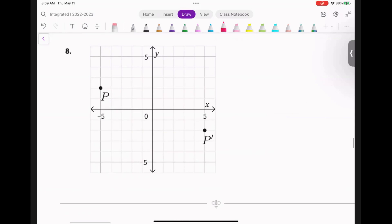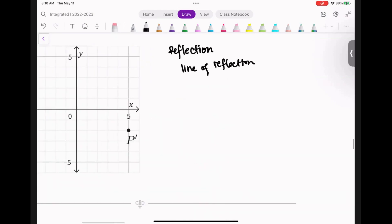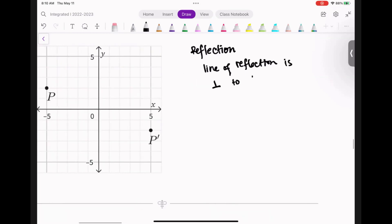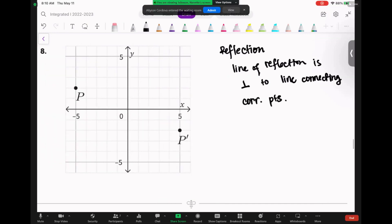So when you do this, things that you have to know about reflection. Let's make a little list. First thing is we know that the line of reflection, so the line of reflection is perpendicular to the line connecting the corresponding points. What does that mean? So the very first thing.